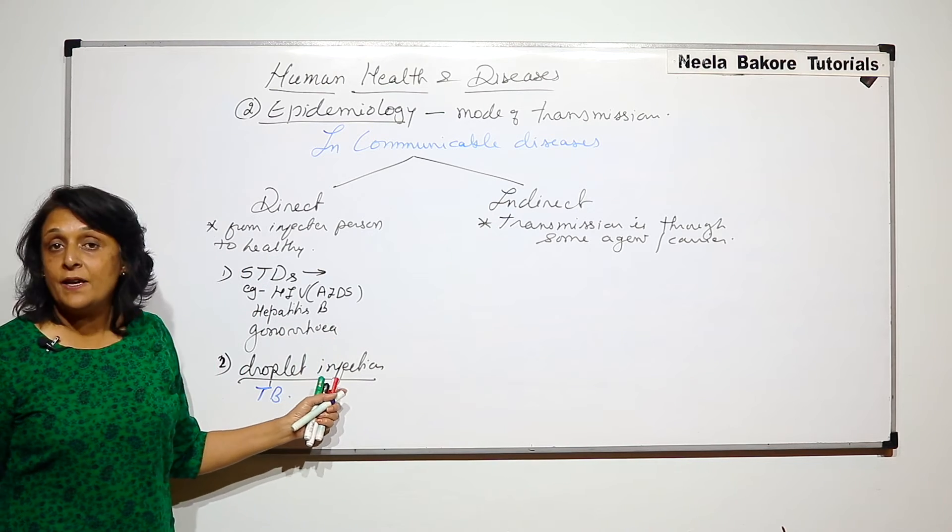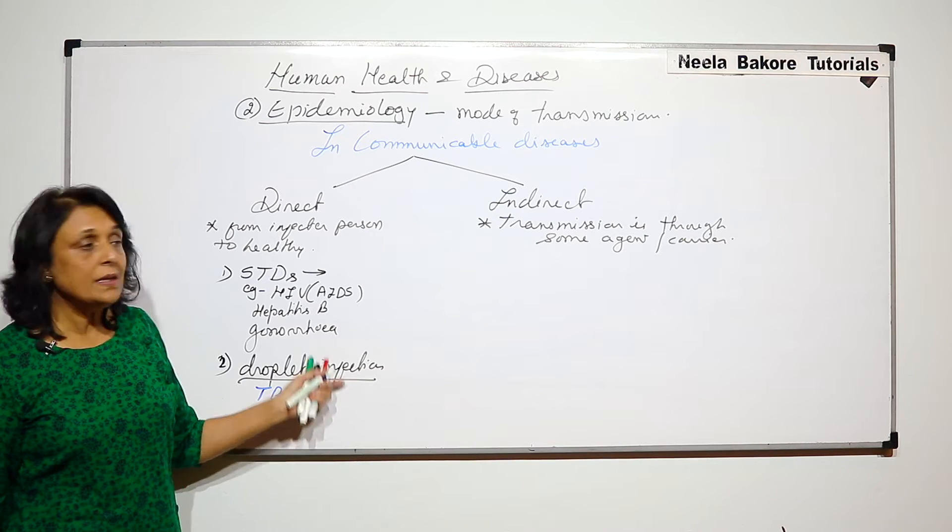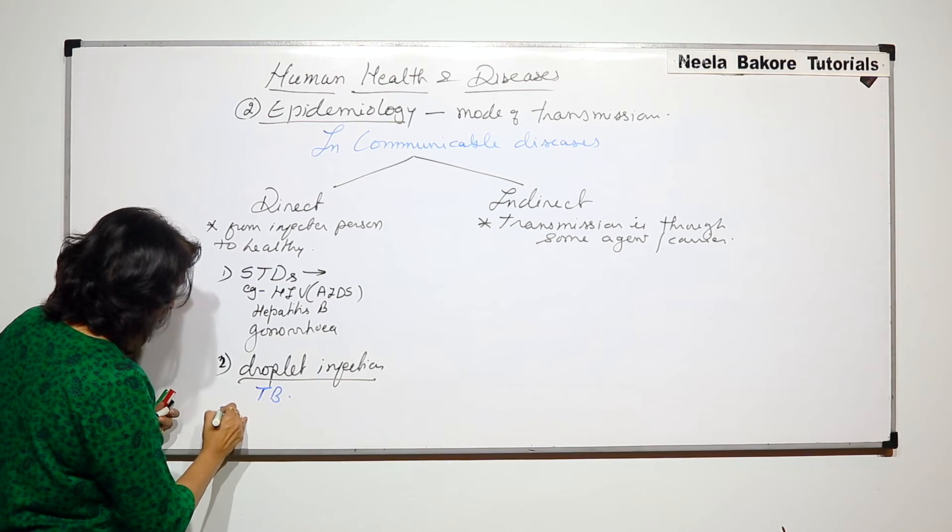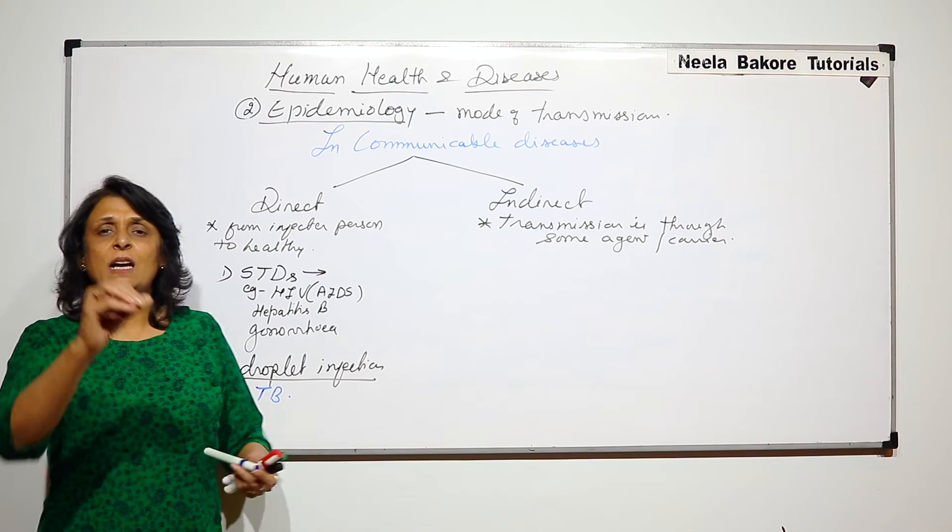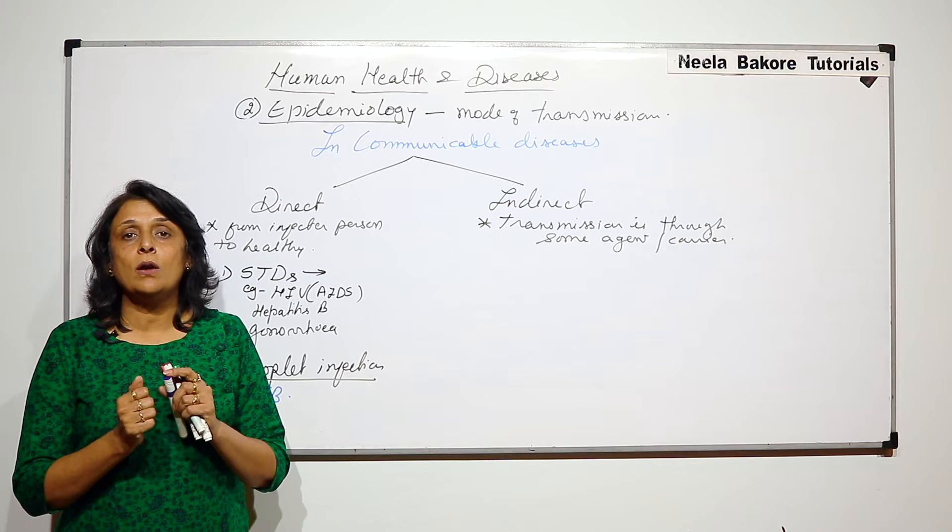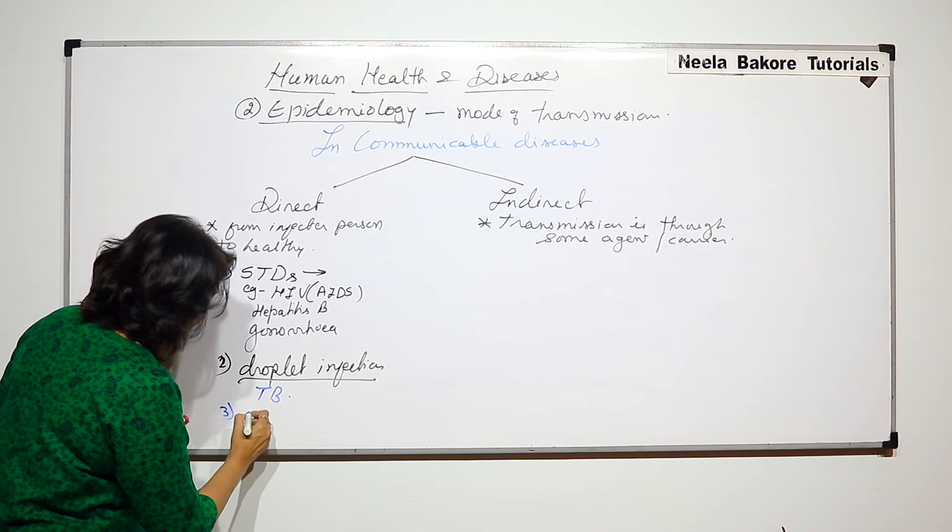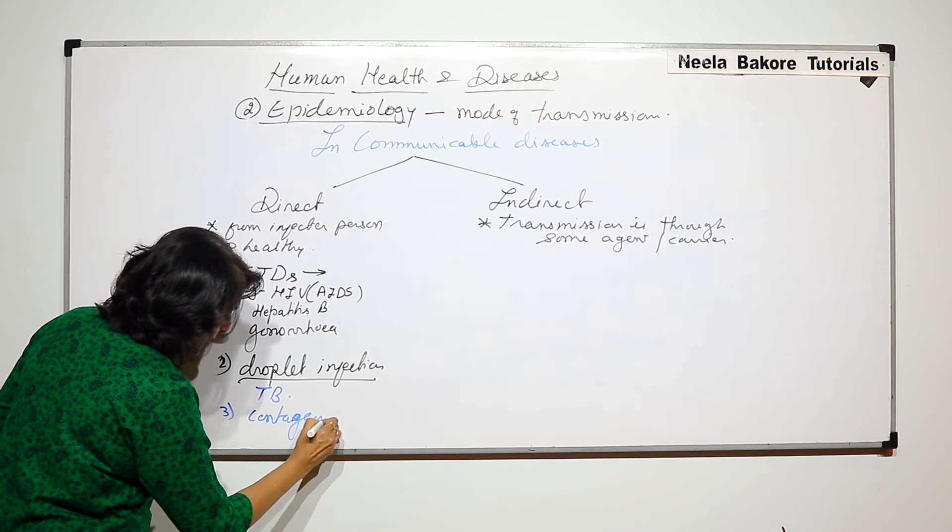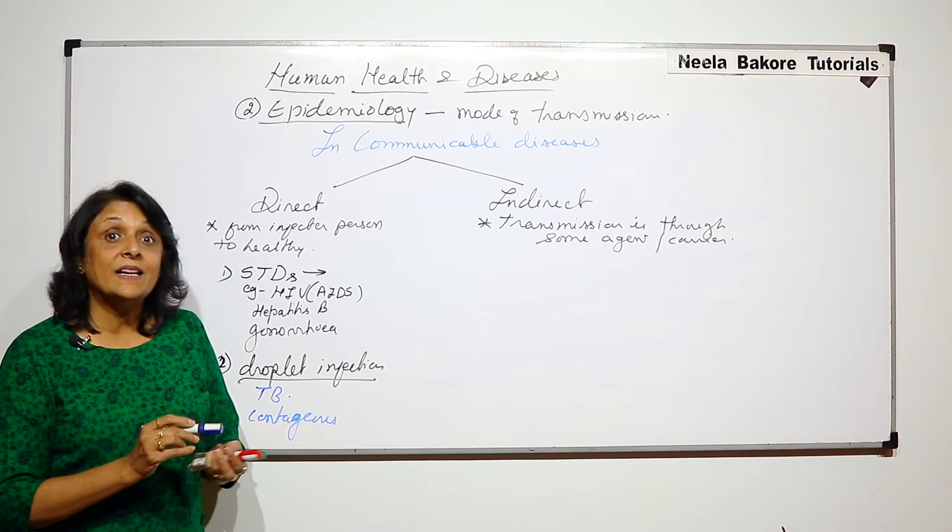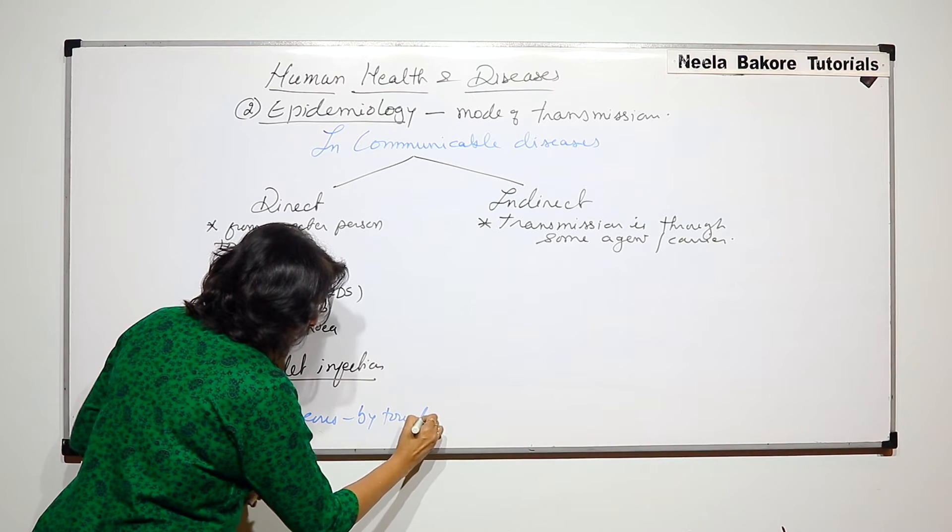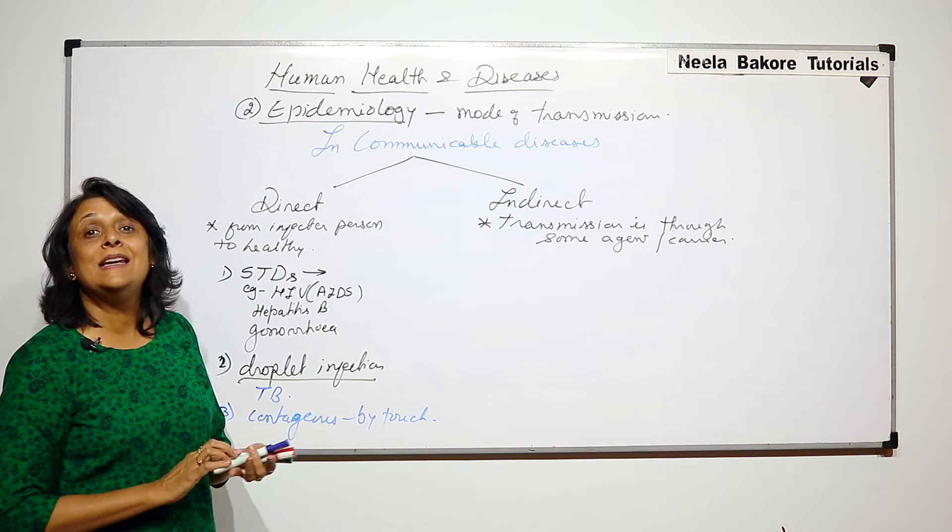So droplet infection is also very very common. STDs are also very common. Then there is one more which is like if you touch the person. So those diseases are again direct contact but they are called contagious. If you have heard of leprosy.